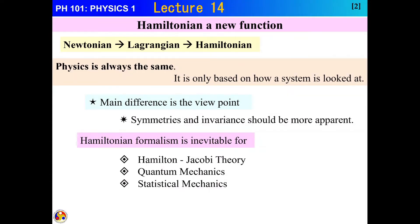The basic difference between Newtonian, Lagrangian, and Hamiltonian is the viewpoint by which you can get the symmetries, cyclic coordinates, and invariance — all of them are very transparent so you can solve the problem quickly. The Hamiltonian formalism is quite inevitable for subjects like Hamilton-Jacobi theory, quantum mechanics, and statistical mechanics. We are going to look at the simplest part of it in this lecture.